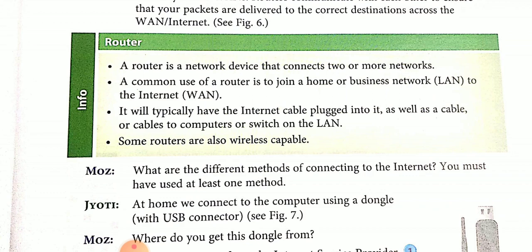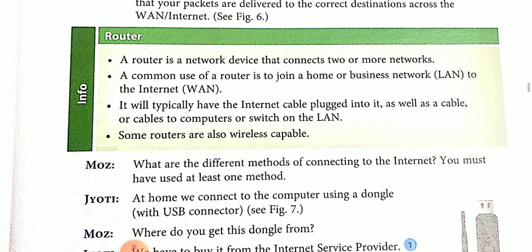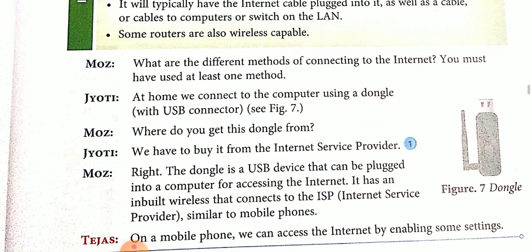Now move to the next topic — router. A router is a network device that connects two or more networks. A common use of a router is to join a home or business network. It will typically have the internet cable plugged into it as well as cables to a computer or switch on the LAN. Some routers are also wireless capable.